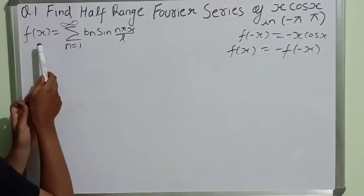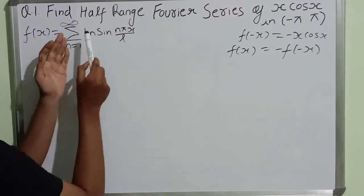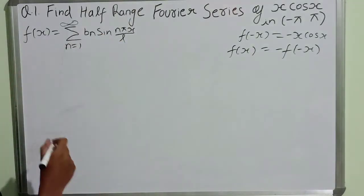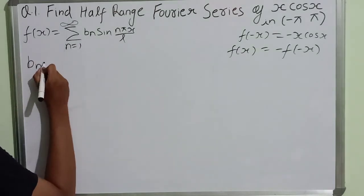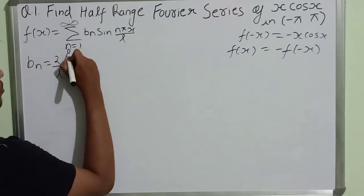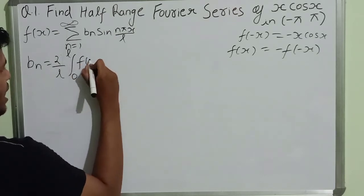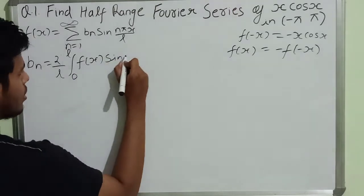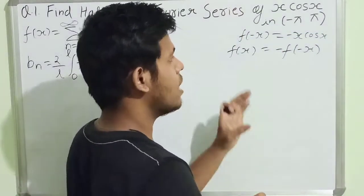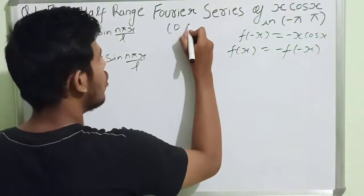The Fourier sine series formula is: f(x) equals summation from n equals 1 to infinity of b_n sin(nπx/l). The formula for b_n is: 2 upon l times the integral from 0 to l of f(x) sin(nπx/l) dx. Now, the interval is minus π to π, so the half-range interval will be 0 to π.